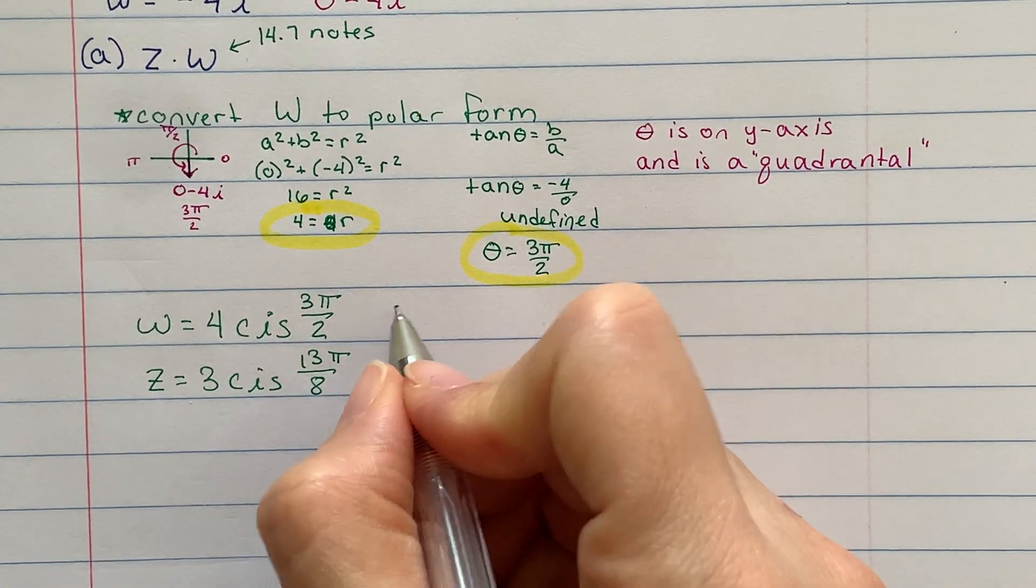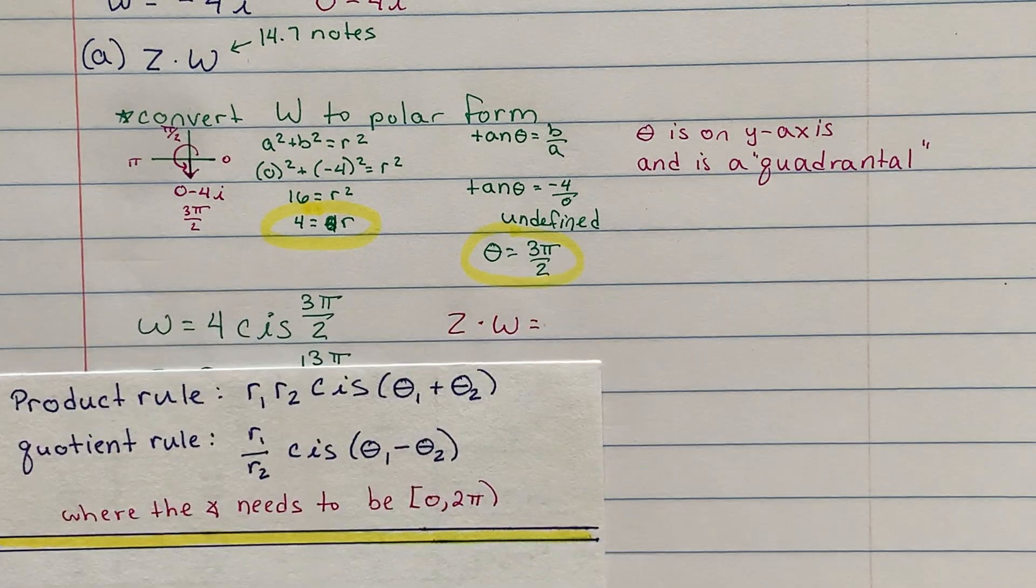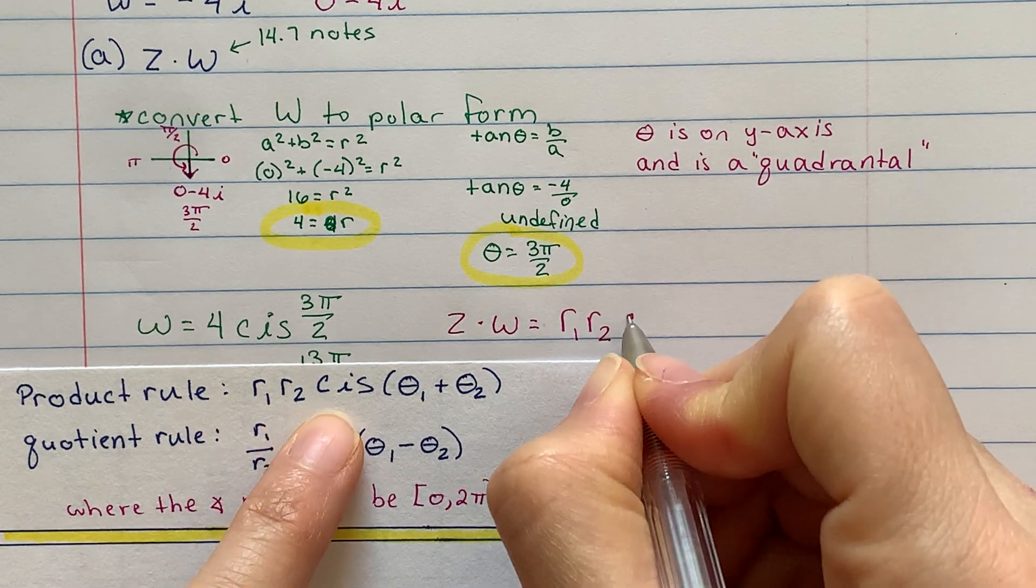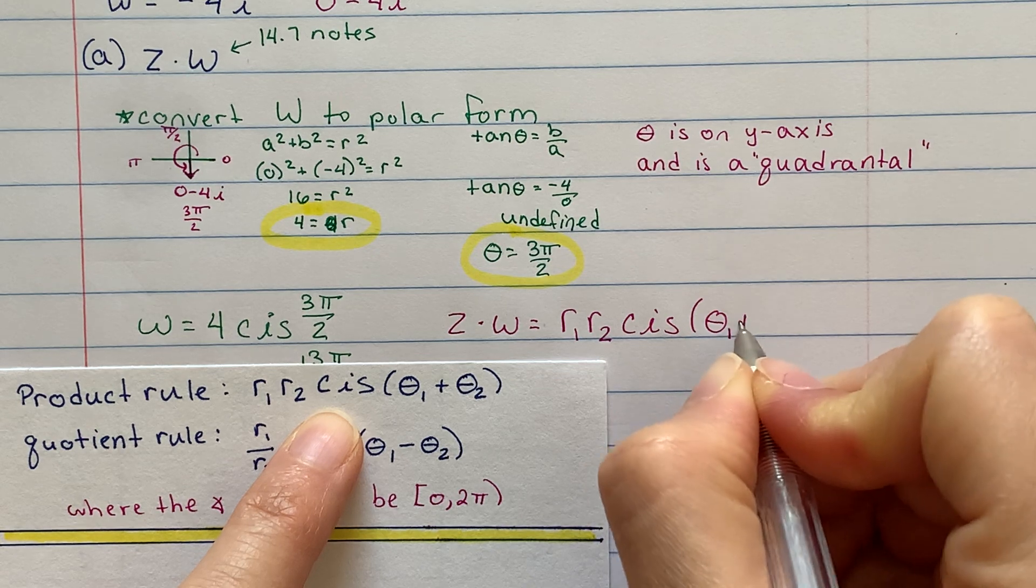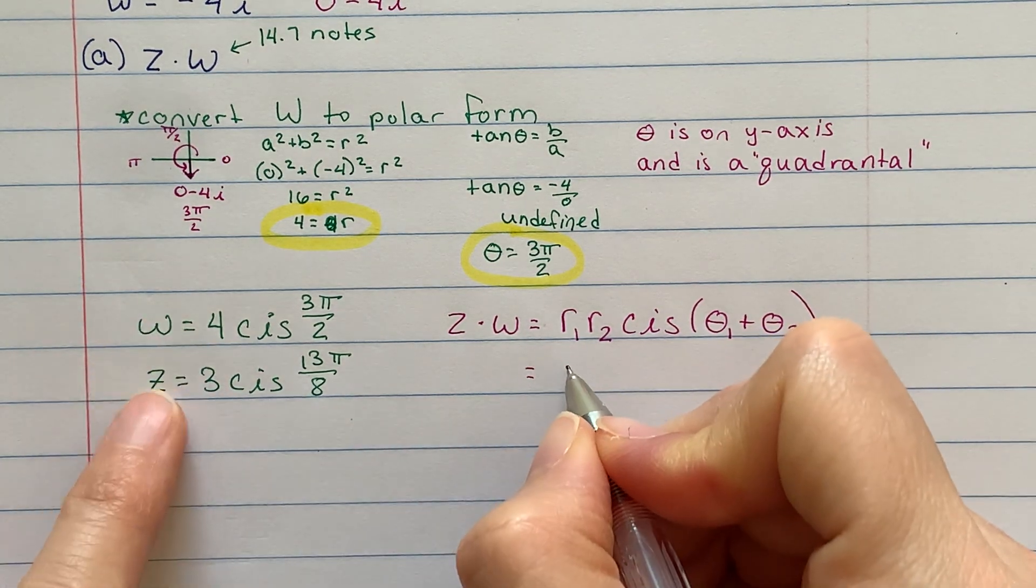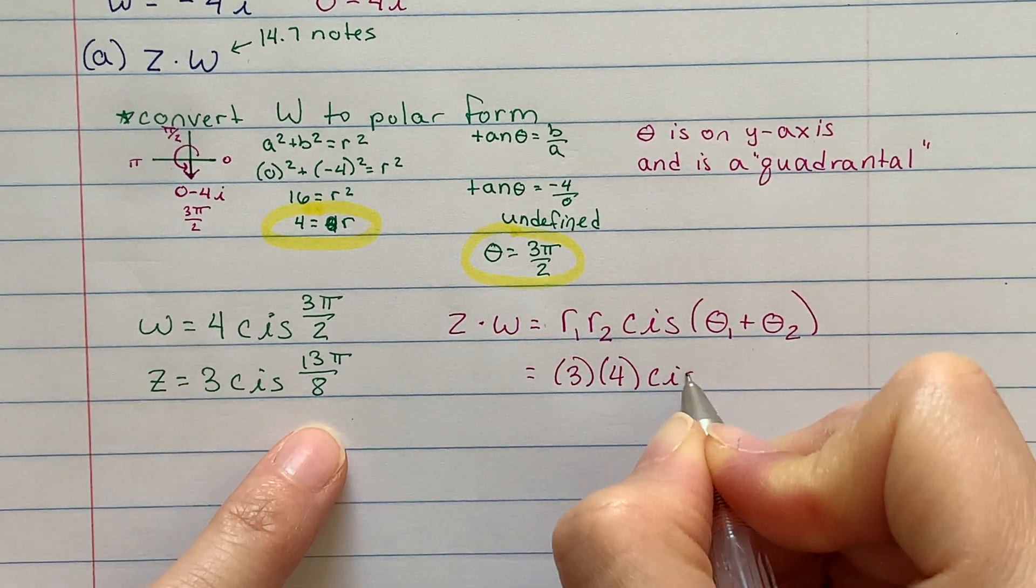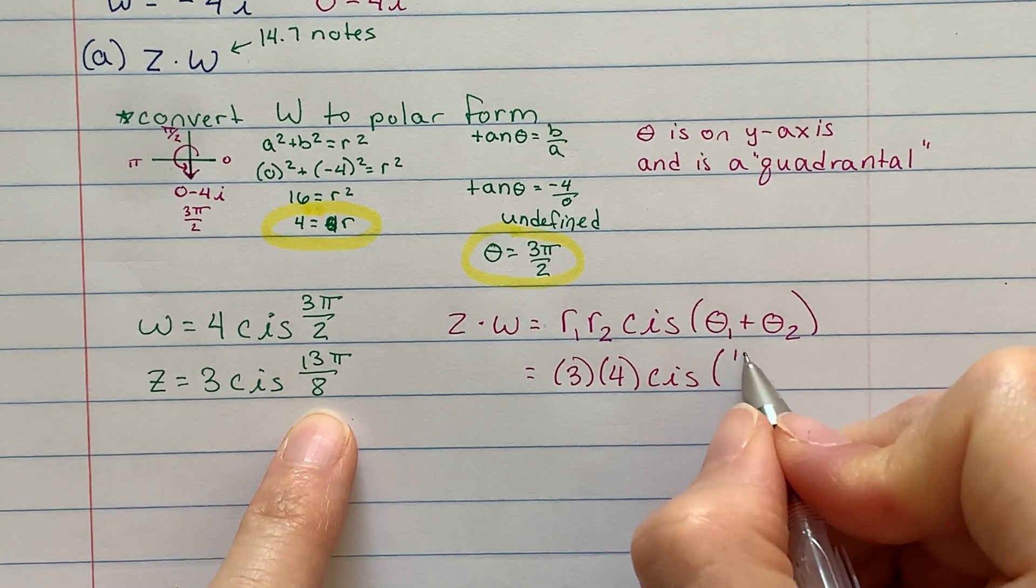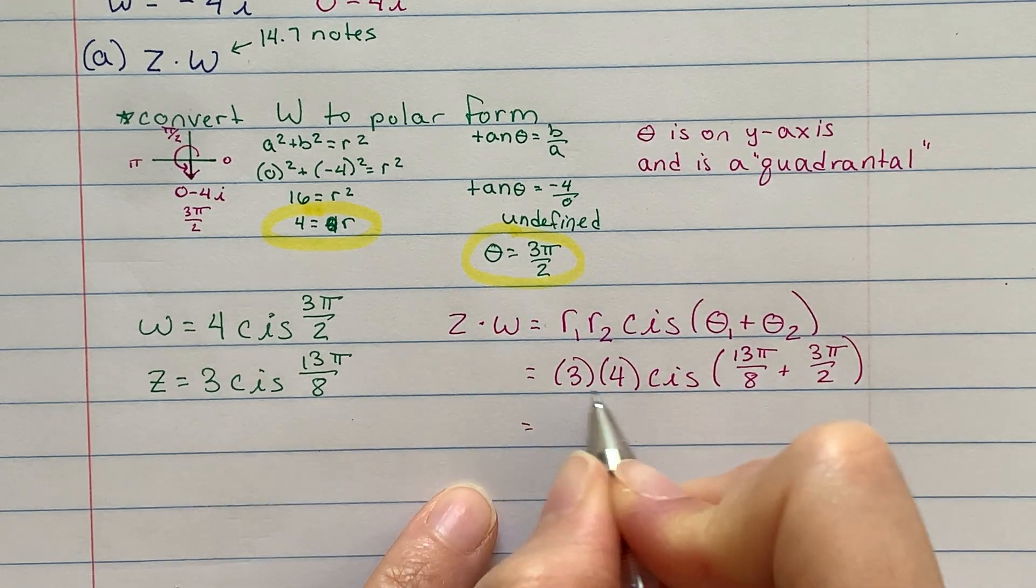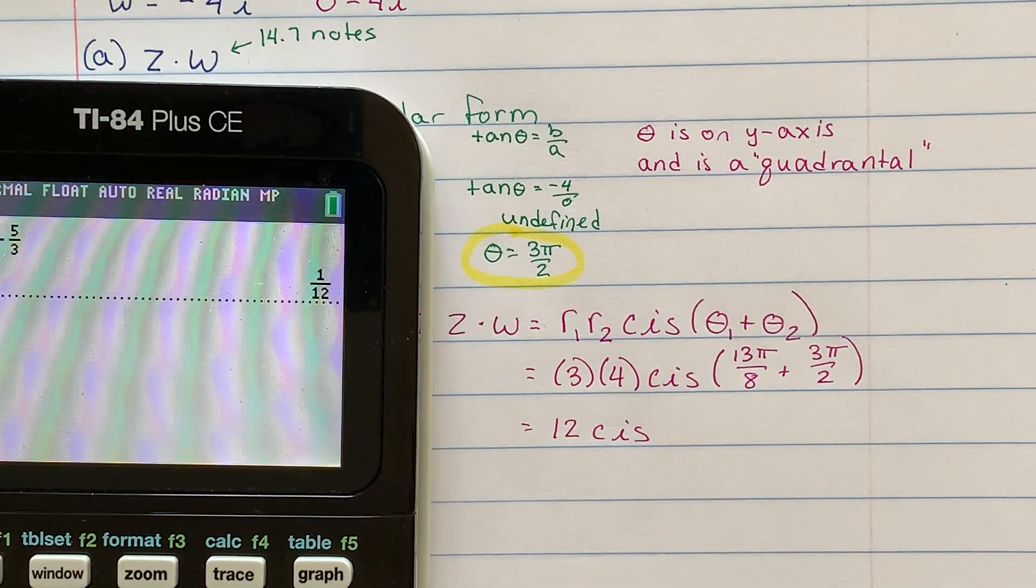So again, this is all a recap from yesterday. What is z times w? So again, I'm going to write that formula down. I'm going to use my handy note card here. Product rule. You do r1, r2, cis, and then you add the angles, theta 1 plus theta 2. So in this question, this is going to be z first. So z is 3 times 4 cis. Theta 1 is my z value. So that's 13π over 8 plus 3π over 2. Let's see. 3 times 4 is 12 cis. And now I'm going to grab my graphing calculators just to add these fractions together for me.